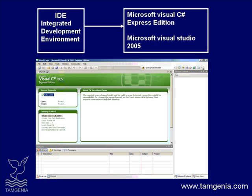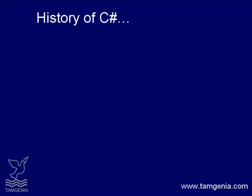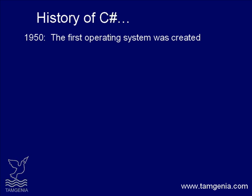In the last 50 years of software development, more than 1,000 programming languages have been created. When computers were first invented, programming was done by toggling in binary machine instructions using the computer's front panel. Those programs were just a few lines of instructions. In the mid-1950s, the first operating system was created. Since 1950, other programming languages were developed like Assembler, COBOL, Fortran, and Pascal.